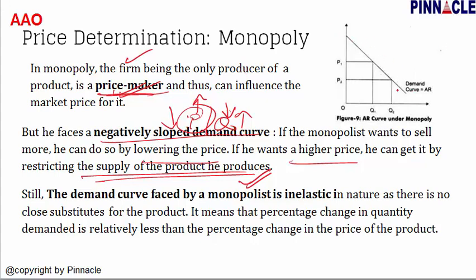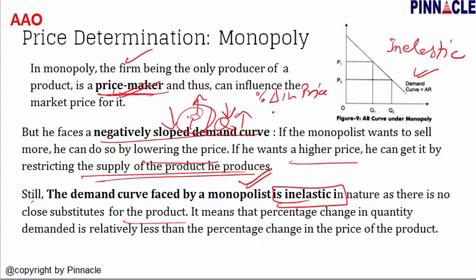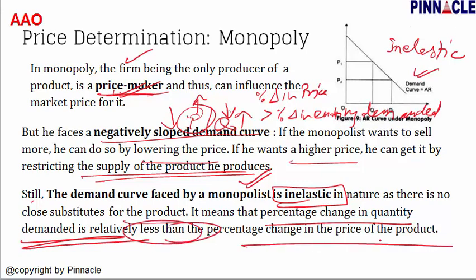The negatively sloped demand curve represents the law of demand. But still the demand curve faced by the monopolist is inelastic in nature, as there is no close substitute for the product. This means the percentage change in quantity demanded is relatively less than the percentage change in price. So the monopolist still gains by raising price, because consumers are compelled to buy from this producer as no close substitutes are available in the market. This inelastic demand further reinforces the monopolist's pricing power.